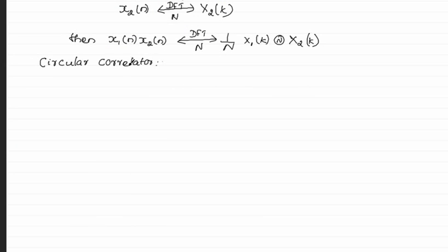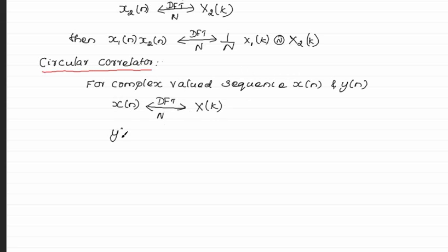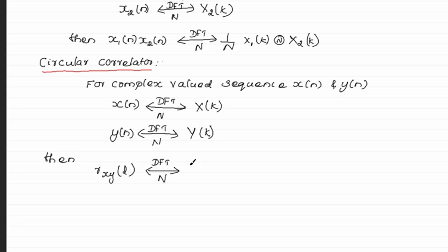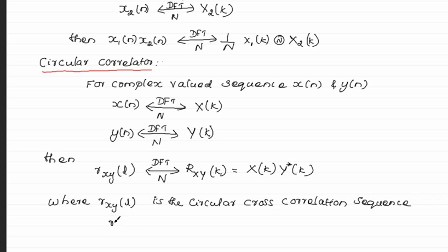Circular correlation property: for complex-valued sequences x(n) and y(n), with DFTs X(k) and Y(k) respectively, the circular cross-correlation sequence r_xy(l), when taking N-point DFT, equals R_xy(k), which is equal to X(k) times Y*(k), where r_xy(l) is the summation from n=0 to N-1 of x(n) times y*(n-l), which is circularly shifted with period N.